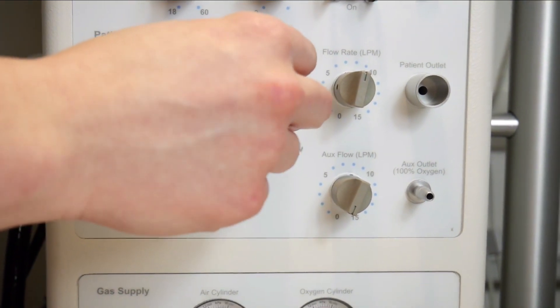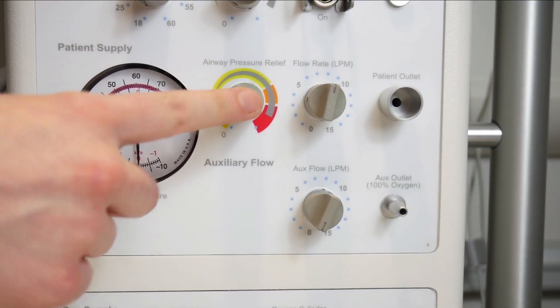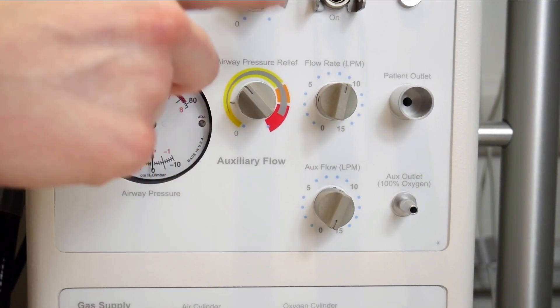This dial is the airway pressure relief or the peak inspiratory pressure. Most people like to set this at a maximum of 30 to begin with.